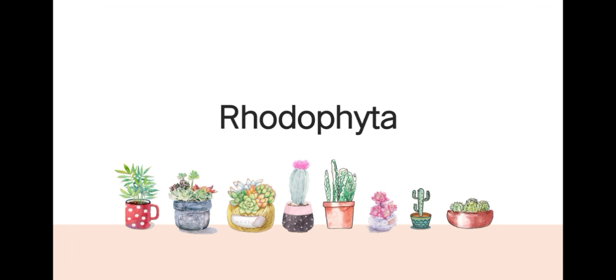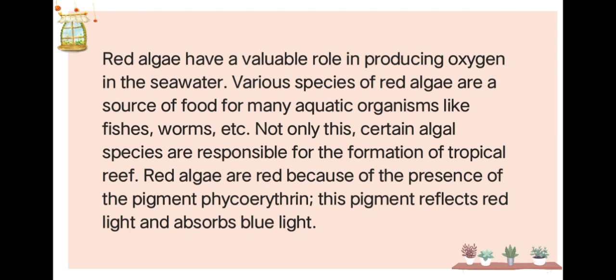Next, Rhodophyta — the red algae. Red algae have a valuable role in producing oxygen in seawater. Various species of red algae are a source of food for many aquatic organisms like fishes and worms. Certain algal species are also responsible for the formation of tropical reefs. They are called red algae because of the presence of the pigment phycoerythrin, which reflects red light and absorbs blue light.